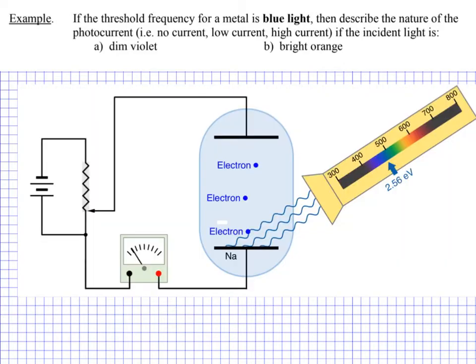Just to recap: in the photoelectric effect we have a light source that we can vary the wavelength of, and that light source is incident on a pure polished metal — in this case we have sodium. The electrons in the metal are liberated by the energy of the photons, and they're able to move across a vacuum — there's no gas in here, nothing to stop them. They complete a circuit, and we can measure this circuit in terms of current using an ammeter.